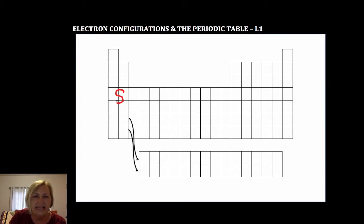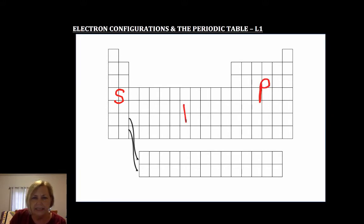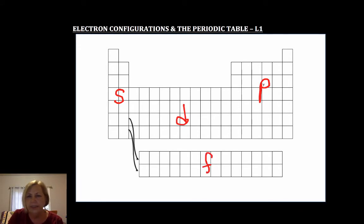Let's first identify these blocks. This is the S block — all of these elements will end in an S sub level. This is the P block — all of these end in P. This is the D block, and this is the F block.